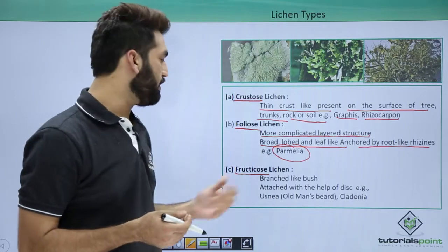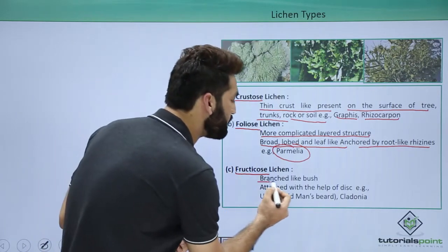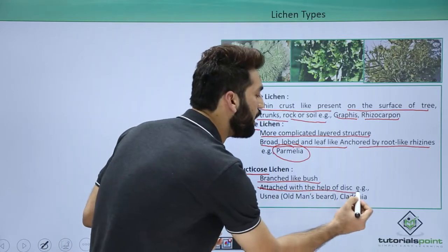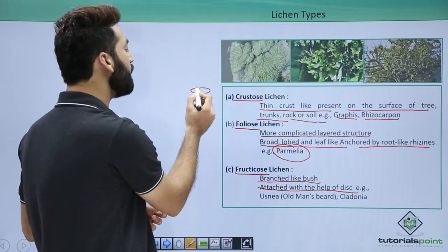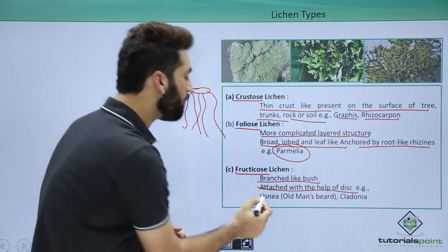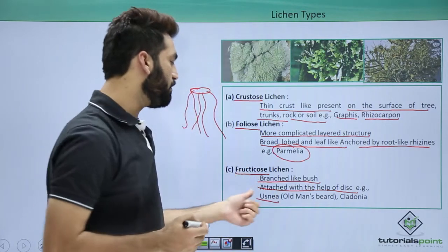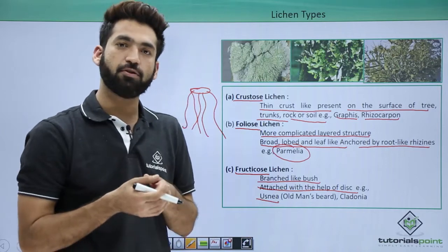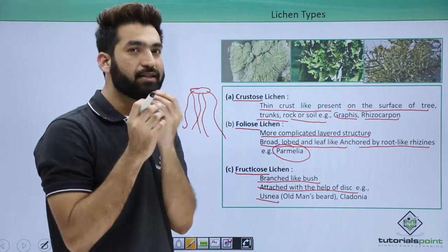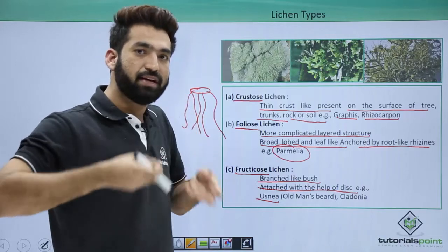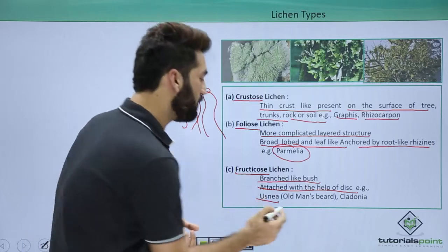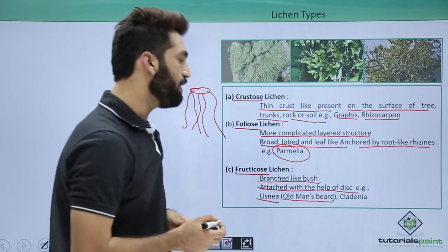When you talk about the third lichen, the fructicose lichen, they are branch-like bushes and they are attached with the help of a disc, through which they get attached. One very important lichen which is fructicose is Usnea, also called old man's beard. It grows on trees — the disc is here and from the disc the beard is coming, so it grows like old man's beard.